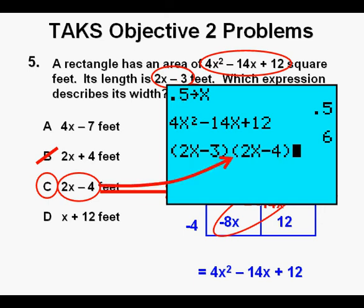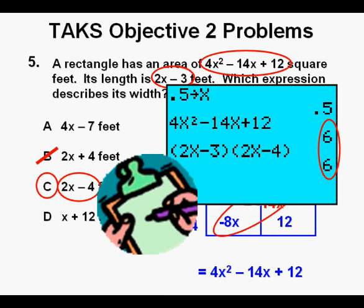Next, enter the expression for the width, 2x minus 4. It's again very important to place that 2x minus 4 inside parentheses. Press Enter. Since that number for the value is also 6, we've demonstrated that our answer is correct. Check. This has been TAKS Objective 2 Problems. Thanks for viewing.